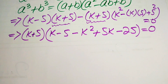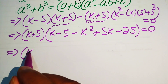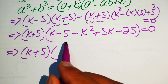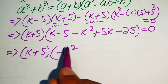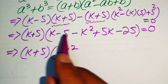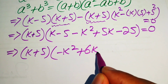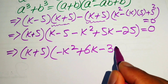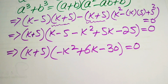Further simplification gives (k plus 5) times (minus k squared plus 6k minus 30) equals 0, since 5k combined gives 6k and the constant term becomes minus 30.